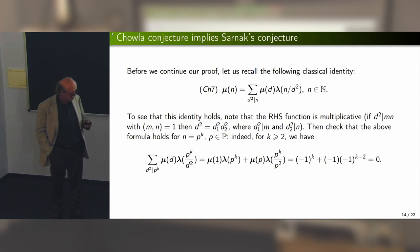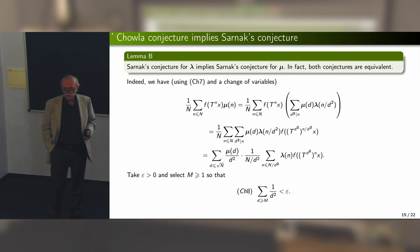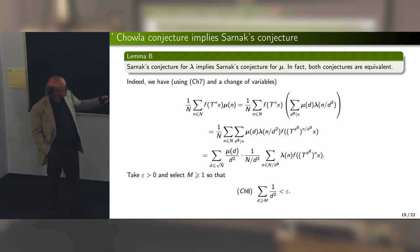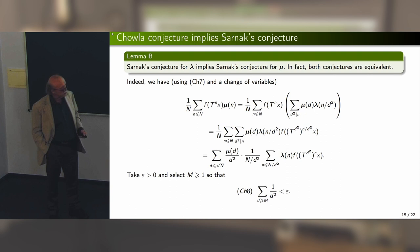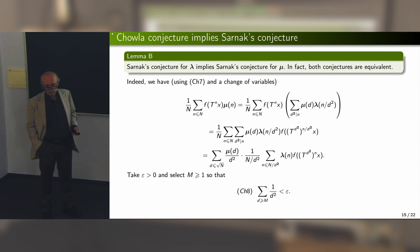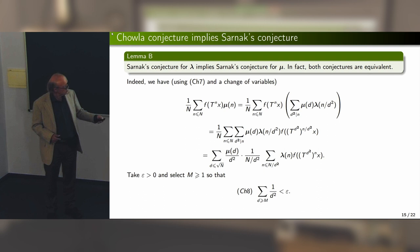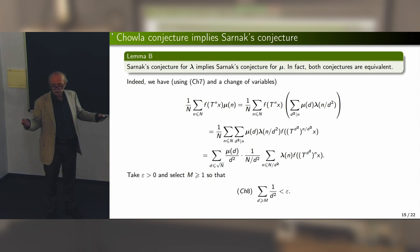Once we have this identity, we try to prove that Sarnak's conjecture for the Liouville function implies Sarnak's conjecture for the Möbius function. We replace mu by the right-hand side of the identity, and by a change of variables — splitting T^n into T^{d^2} applied to T^{n/d^2} — we obtain expressions where, for fixed d, we have the transformation T^{d^2}. Since T was deterministic, all powers of T are also deterministic. We already have Sarnak's conjecture for the Liouville function, so these expressions go to zero for fixed d.